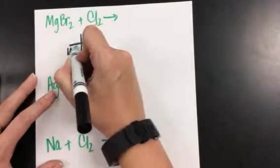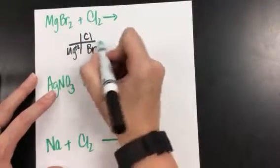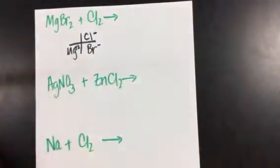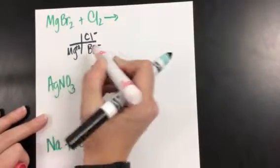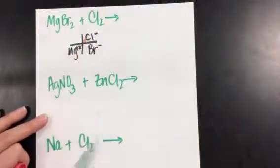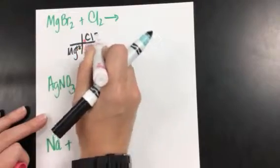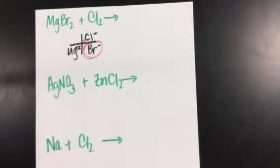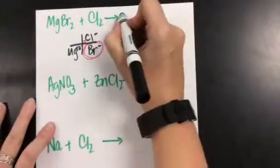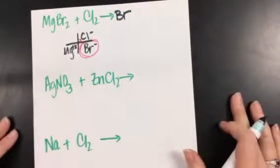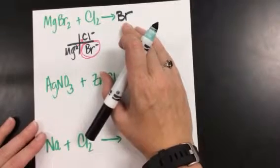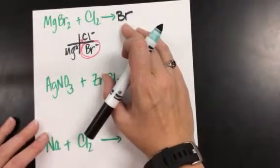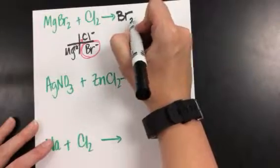Magnesium has a plus two charge. Bromine is negative one. Chlorine is negative one. In order to predict my products, you actually have to trade partners. Magnesium is currently paired up with bromine — now we're going to pair it up with chlorine, but that leaves bromine with nothing to pair with. So that is going to be my single element on the other side of the reaction. Bromine — you need to ask yourself, is it diatomic? Bromine is, so it gets a two.